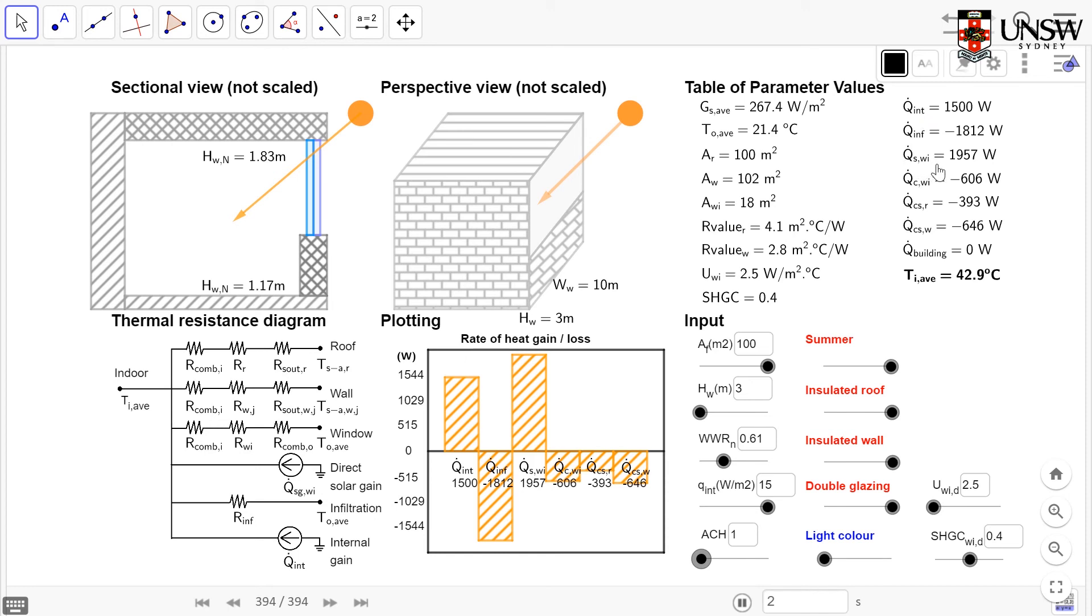But you may be able to control the solar gains within your building. So currently we don't have any shading on this building, but let's have a look at what we can control, and that's our window to wall ratio. So if we reduce this window to wall ratio, what we'd expect is that we have a decrease in the solar gains, and that we'd have a decrease of the indoor average temperature. So let's have a look at that.